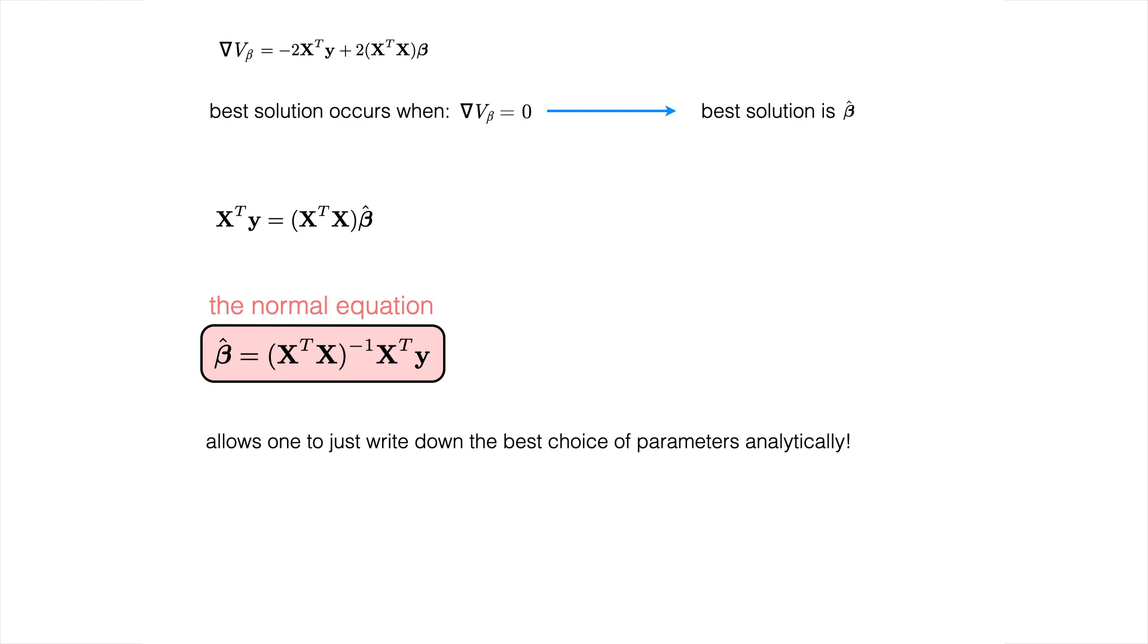This is very very powerful. It allows one to write down the best choice of parameters analytically. There's no iteration process here, there's no uncertainty or ambiguity about whether you're in the best solution. This is guaranteed to give the best result but the caveat is that it's only valid for linear models and it's only valid when assuming you're minimizing the least squares. Because we're minimizing these squares and it's linear we often describe this as a linear least squares problem or sometimes it's called ordinary least squares as well.